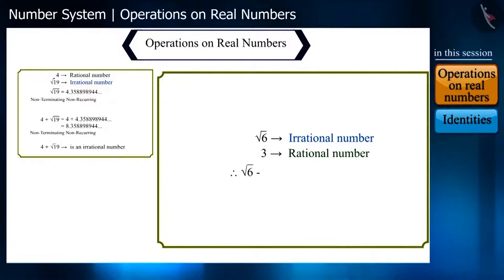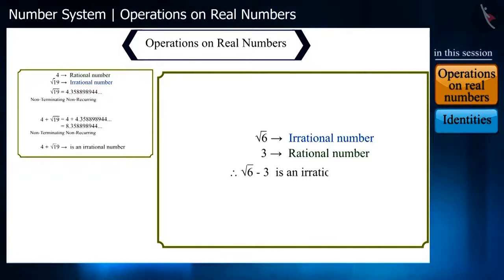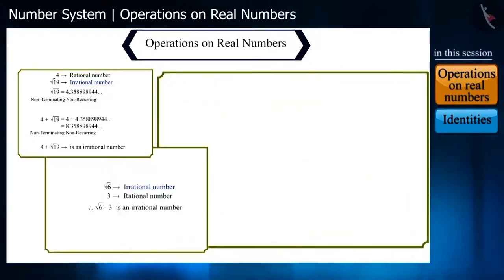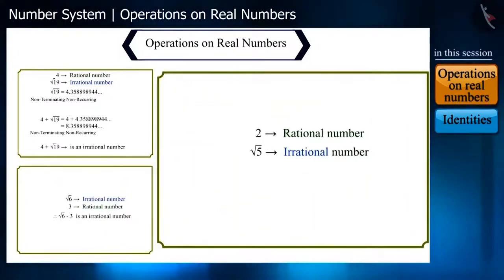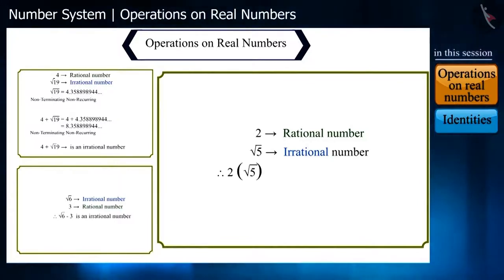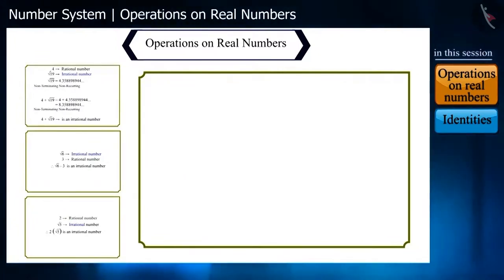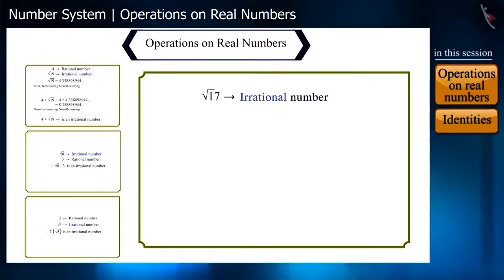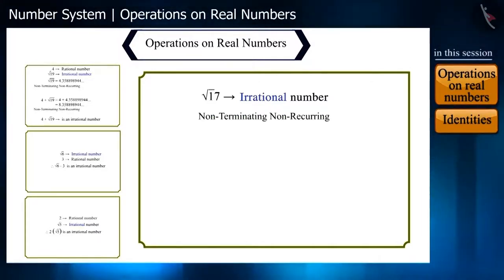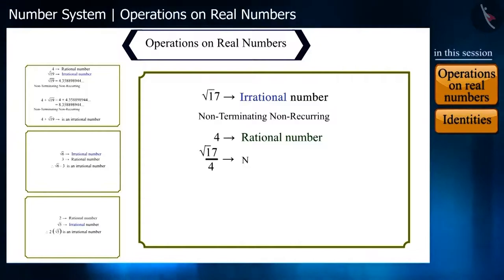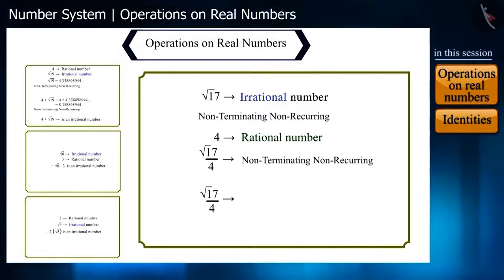For subtraction, √6 − 3 is an irrational number since √6 is irrational. On multiplying 2 with √5, we get 2√5, which is also irrational. For division, √17 is irrational and its decimal form is non-terminating and non-recurring. Dividing by 4, we get √17/4, whose decimal form is also non-terminating and non-recurring — so it is irrational.